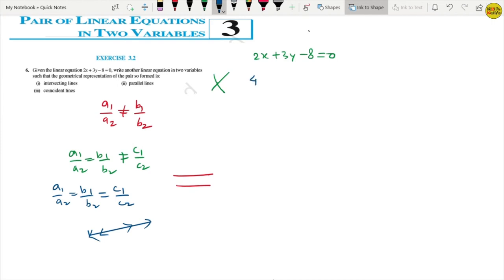So 4x can be 1 by 2, 6y can be 1 by 2. 1 by 2. So 8 to the 16, minus 16 equals to 0.